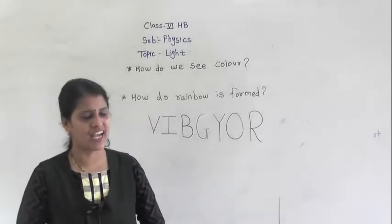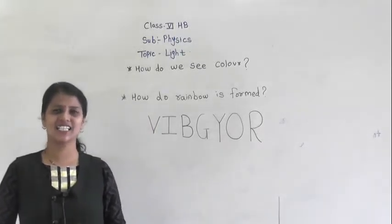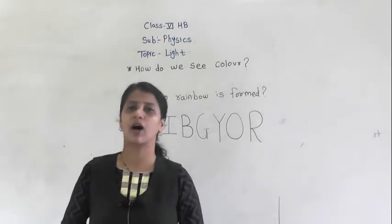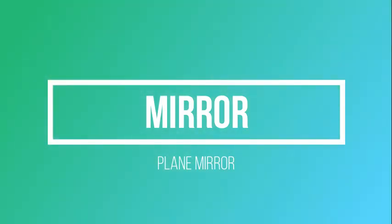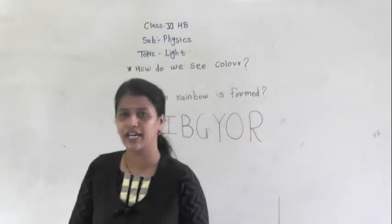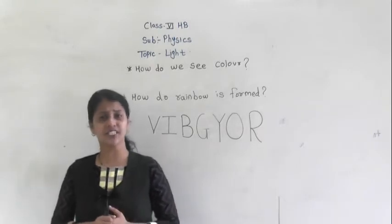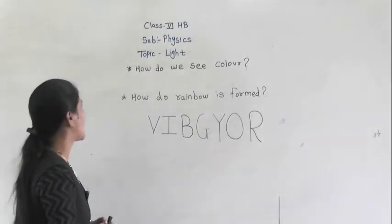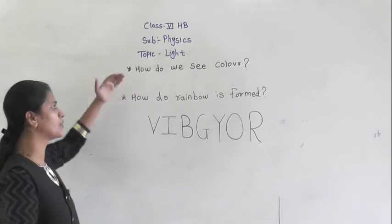Hello everyone, we are back with our physics lecture. In the last video, we discussed about a plane mirror and its characteristics. In today's video, we are going to discuss a concept of light — that is, how do we see color?